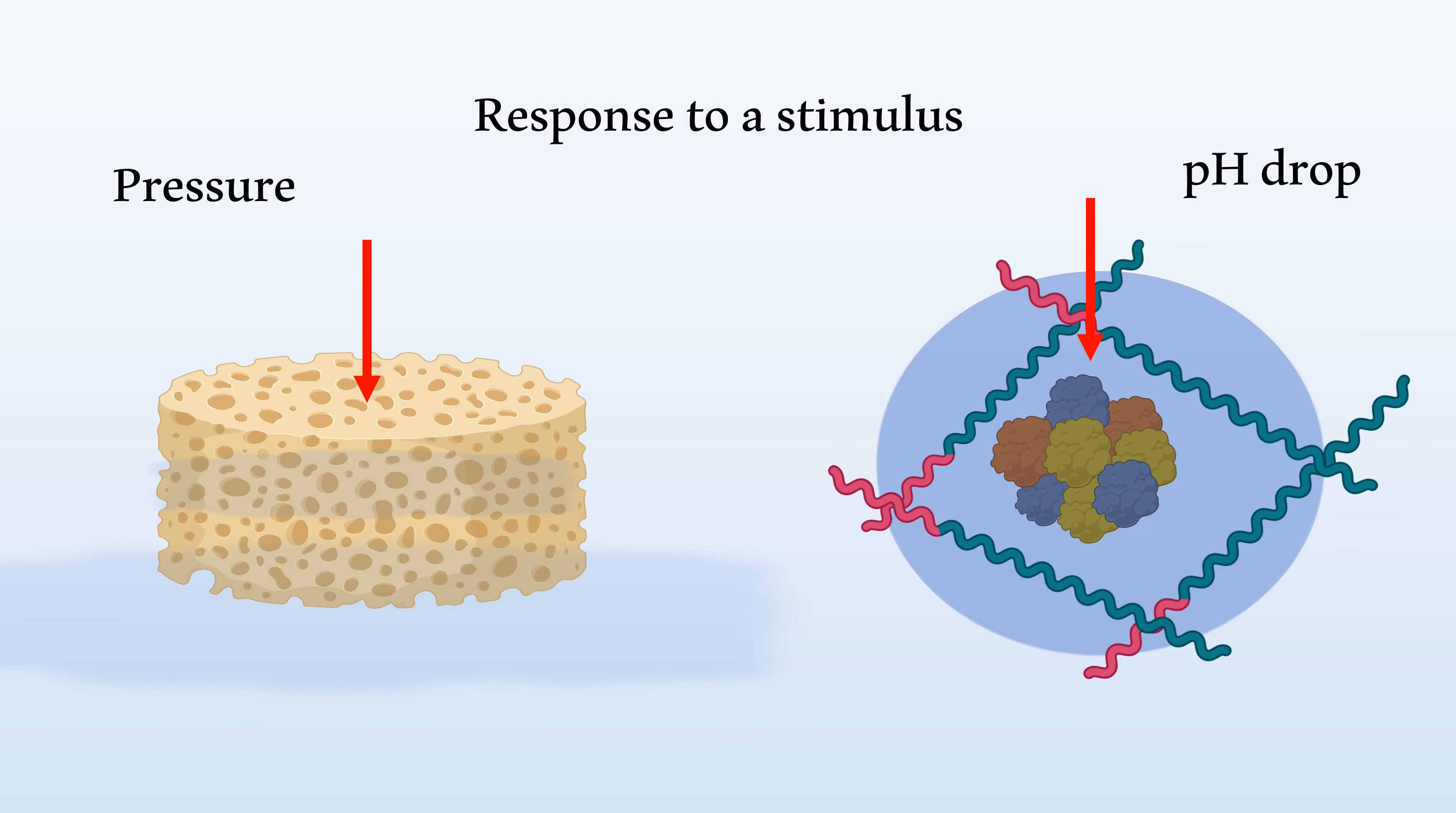These are important since it allows the drug to be released only under certain conditions. For example, in cancer treatment, this is especially helpful since tumors tend to be more acidic than the rest of the body, which means they can be targeted by pH-responsive nanogels.